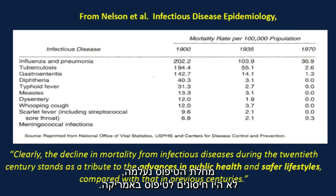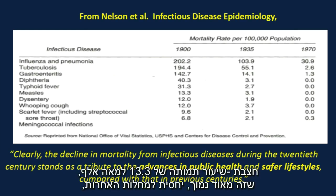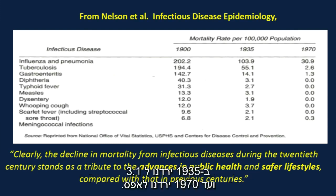Typhoid fever — it's gone, and there was no typhoid fever vaccine in America. Measles had a mortality rate of 13.3 per 100,000, which is very low compared to these other diseases. By 1935, we're down to 3.1. By 1970, we're down to zero.